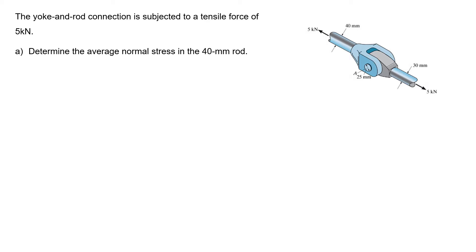Part A determines the average normal stress in the 40 mm rod. For part A, we have our 40 mm rod and 5 kN force. We need to find the average stress, which is normal force over area.